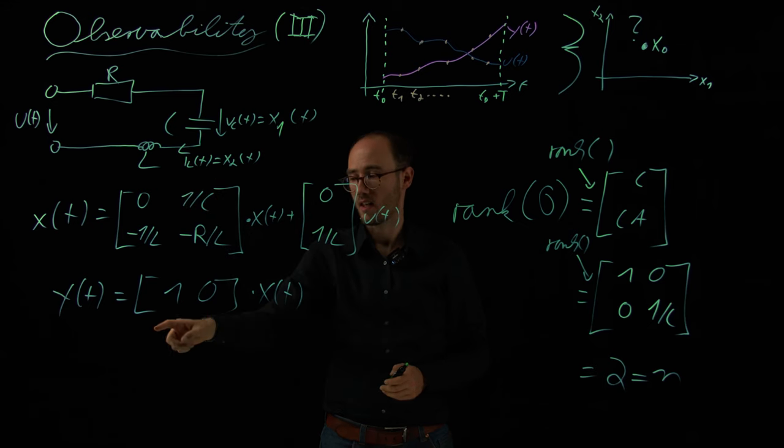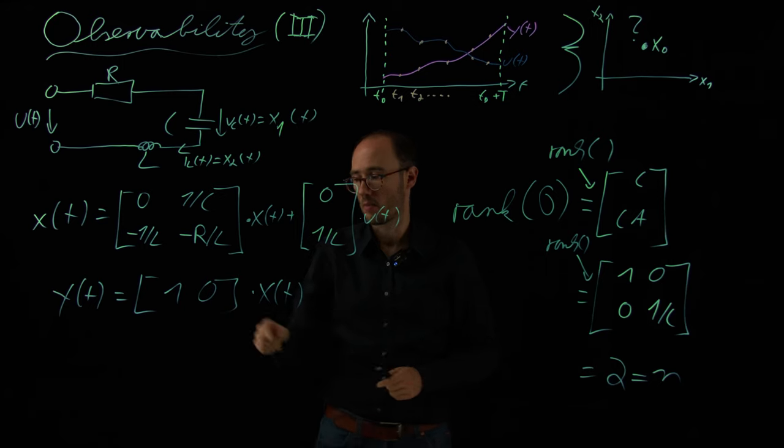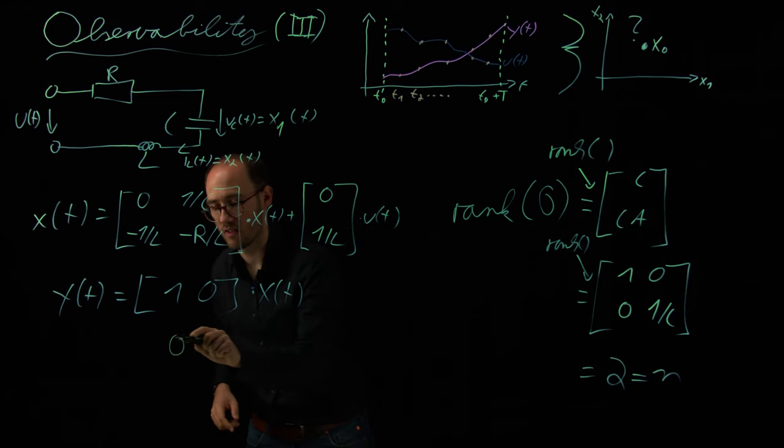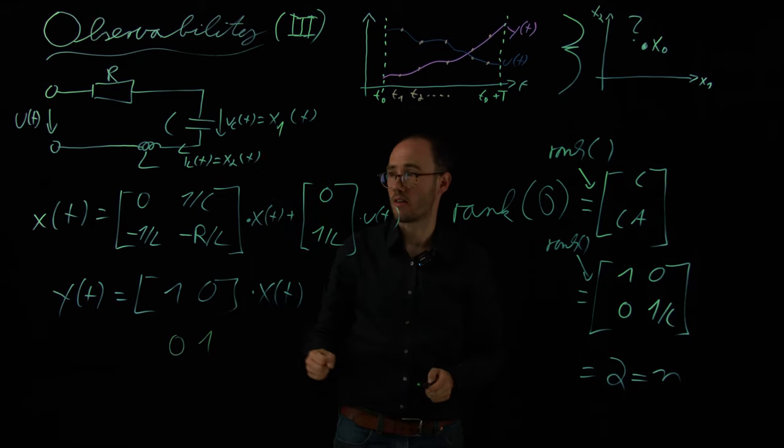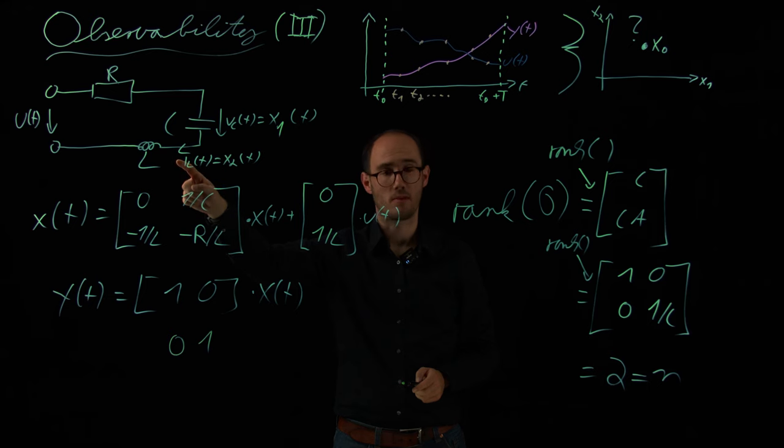By the way, the example would also work vice versa. So if I would change that here to 01, you can do that at home, we will be also able to actually estimate the capacitor voltage based on the measurement of the inductor current.